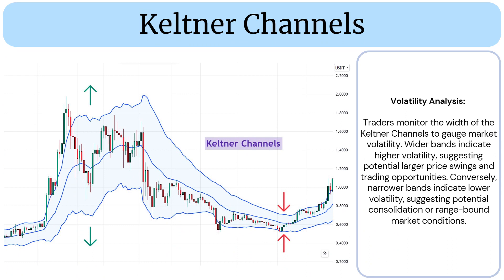Volatility Analysis: Traders monitor the width of the Keltner Channels to gauge market volatility. Wider bands indicate higher volatility, suggesting potential larger price swings and trading opportunities. Conversely, narrower bands indicate lower volatility, suggesting potential consolidation or range-bound market conditions.